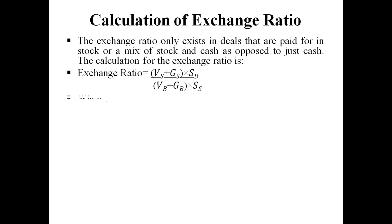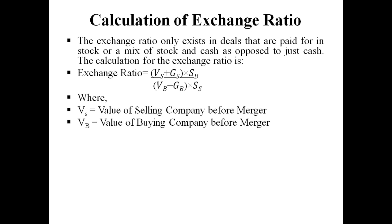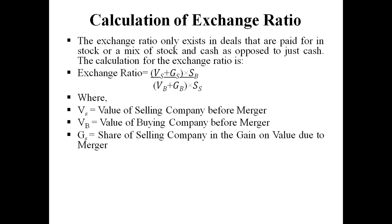The exchange ratio formula is: (VS + GS × SB) / (VB + GB × SS). Where VS is the value of the selling company before merger. VB is the value of the buying company before merger. In acquisition terms, the selling company is the subsidiary company and the buying company is the holding company. So both values before merger are determined and included in the exchange ratio.